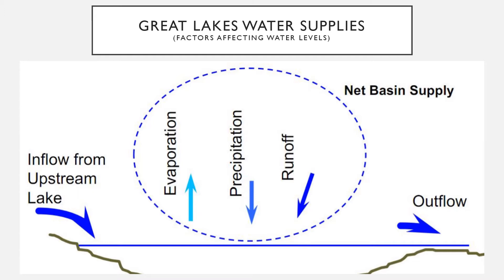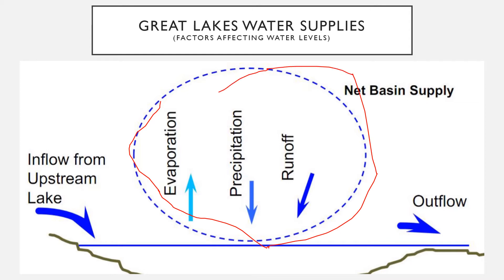This diagram shows all the different factors that influence water levels on the Great Lakes. We have the inflow from the upstream lake, which would be Lake Superior, and then the outflow, which would be the St. Clair River flowing into Lake Erie and then Lake Ontario. Evaporation, precipitation, and runoff play the largest role in water levels in Lake Michigan and Lake Huron, because there is very little regulation from the inflow of Lake Superior and the outflow isn't regulated at all. So it's basically the weather and climate patterns — specifically precipitation — which influence the water levels the most.